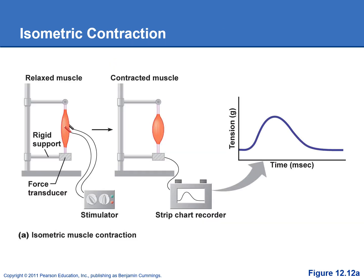Let's look at an isometric contraction first. Remember, we keep the muscle length the same but the tension increases. We've taken a muscle and attached it to a bottom piece that's not going to move. When we stimulate it to contract, it generates a lot of force or tension, but it's not able to overcome the load and move that bottom piece. The muscle cannot shorten and lift the load — the length stays the same but the tension increases, which is what makes it an isometric contraction.